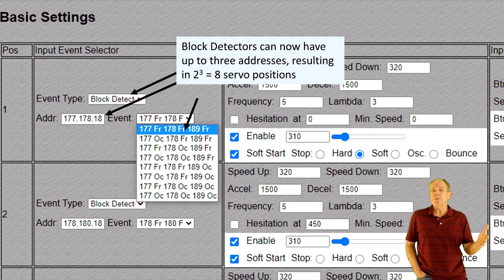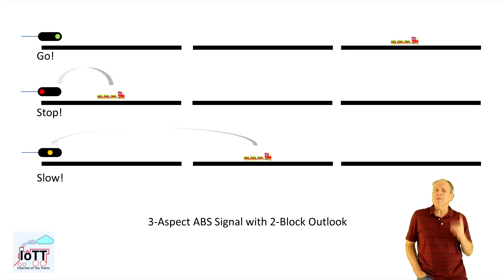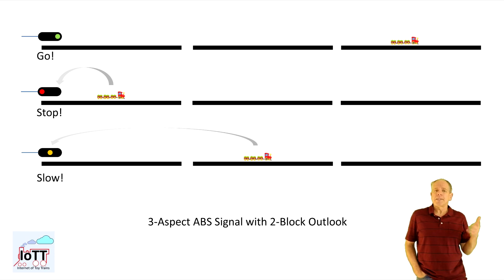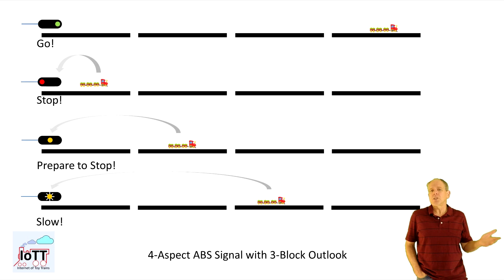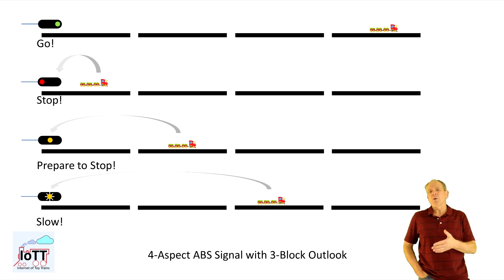While thinking about that, it dawned on me that this is exactly what an ABS signaling system does. A particular signal looks one, two, or three blocks ahead and essentially displays the occupancy status of those blocks. If the adjacent block is occupied, the signal shows stop to prevent another train from entering. If the next block is free but the one after is occupied, the signal shows slow — meaning the train can enter but must be prepared to stop at the next signal.